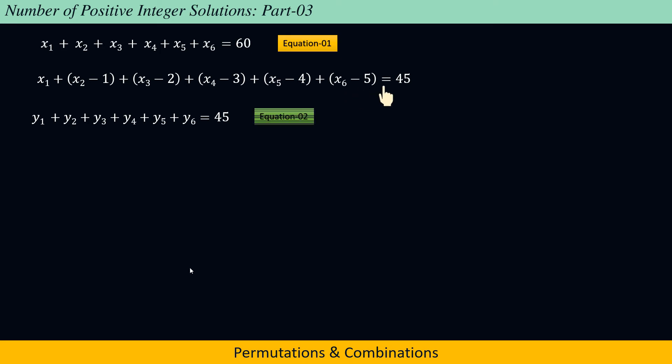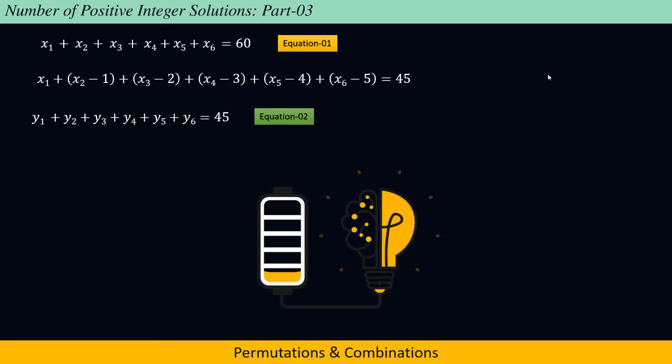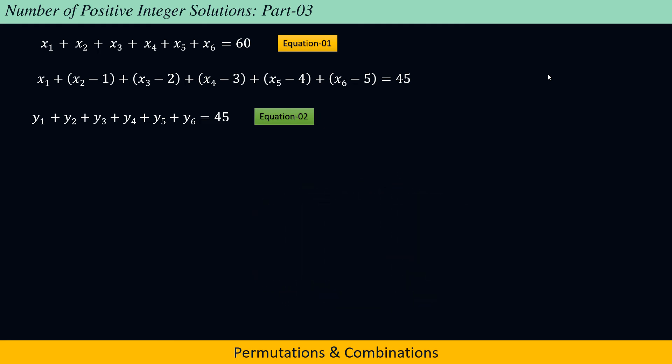In order to find non-negative integer solutions of equation y1 plus y2 plus y3 plus y4 plus y5 plus y6 equals 45. The number of non-negative integer solutions of equation 2 is equal to the number of non-negative integer solutions of equation 1.